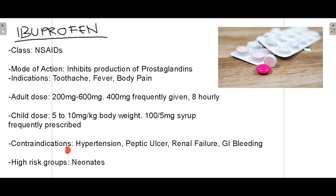There are some important contraindications to ibuprofen. It should not be given to patients suffering from hypertension as it raises blood pressure. Patients with peptic ulcer should also avoid it, as NSAIDs tend to increase bleeding from ulcers. Since ibuprofen is mostly excreted by the renal system, it should not be prescribed to patients with renal failure. Additionally, it should be avoided in patients with GI bleeding. The highest-risk group that should not receive ibuprofen at all are neonates.